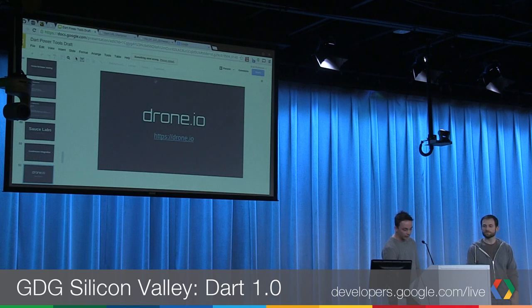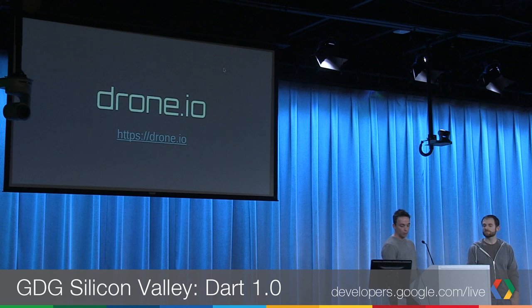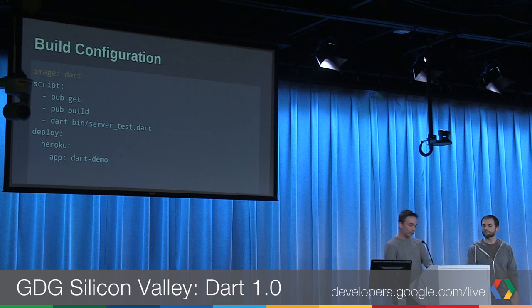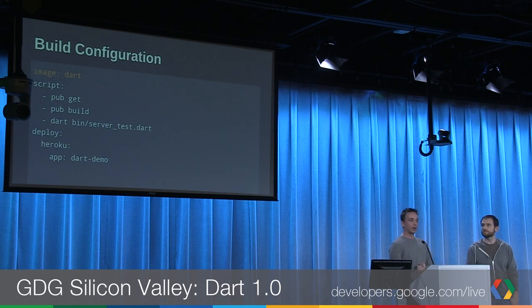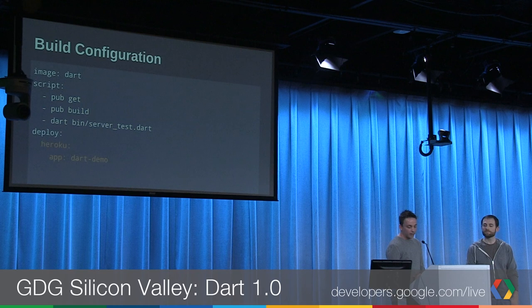How do we set up a build? How do we instruct the build commands — how do we tell it to compile and run our Dart code and tests? We do that with a simple YAML configuration file checked into the root of your repository. It has benefits like building branches differently. The YAML file specifies the image — we want a Dart image. The cool thing about Drone is it runs all builds inside a virtual machine, downloading those virtual machines from a centralized repository using a technology called Docker. You never have to install your own software or configure your own build environments. We have prebuilt virtual machines for Dart, Java, 14 different languages and multiple versions. The second piece is instructing it what build commands to run, and optionally you can deploy to Heroku at the end of the build automatically for a continuous delivery flow.